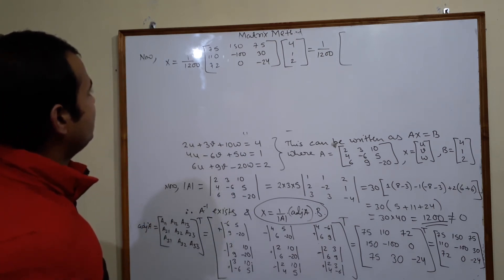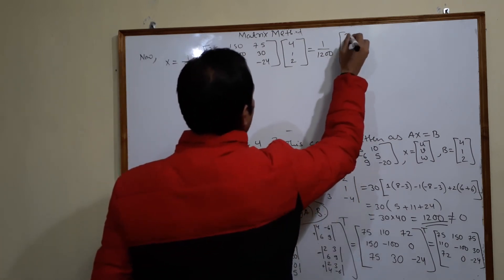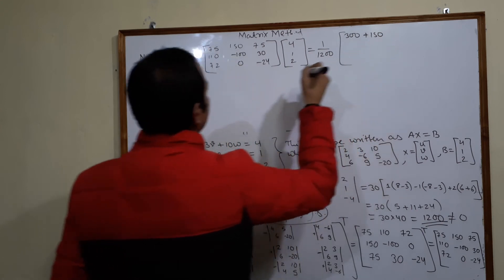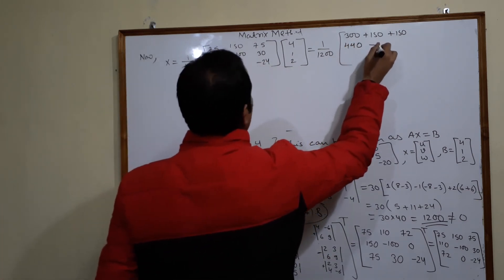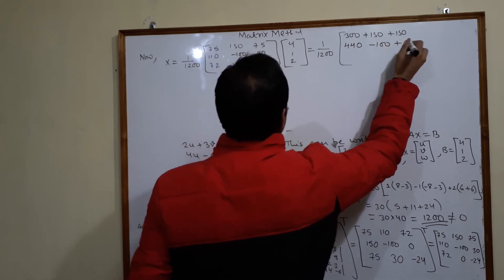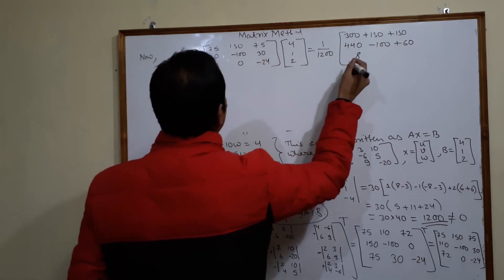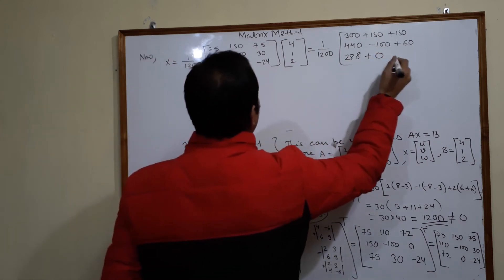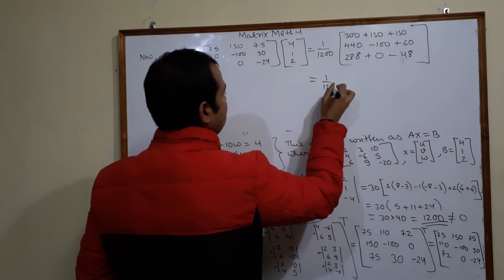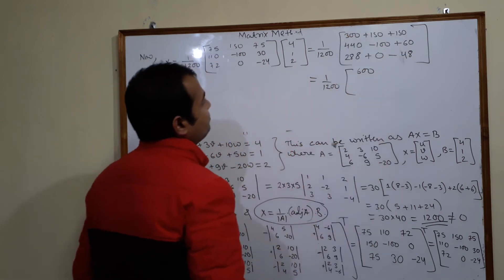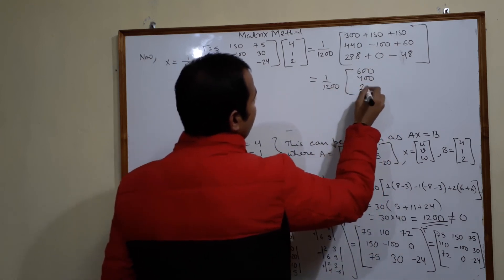Now let us multiply. For the first component: 75×4 + 150×1 + 75×2 = 300 + 150 + 150 = 600. For the second: 110×4 + (-100)×1 + 30×2 = 440 - 100 + 60 = 400. For the third: 72×4 + 0×1 + (-24)×2 = 288 + 0 - 48 = 240.